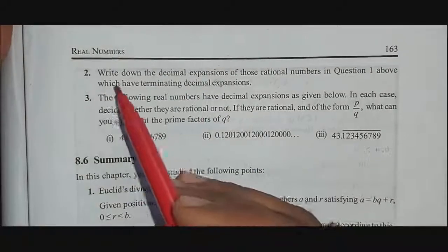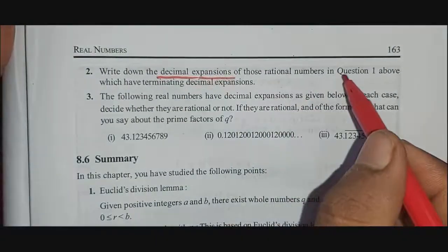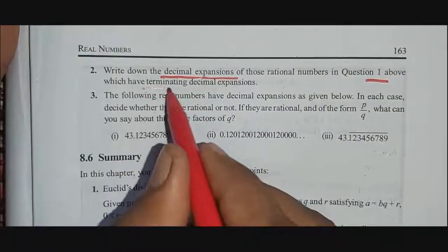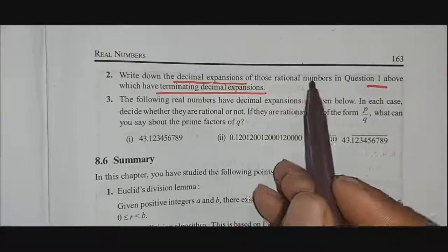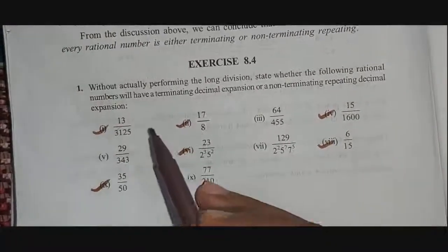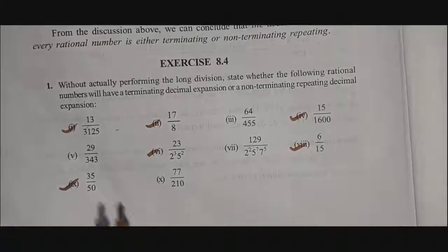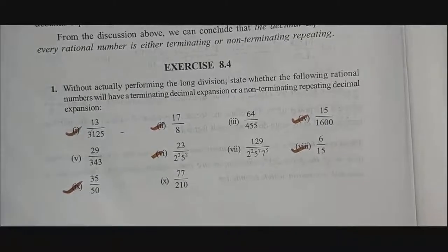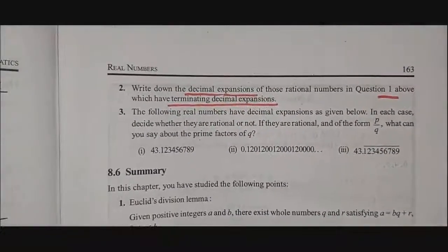Now the second main question: write down the decimal expansions of those rational numbers from question 1 which have terminating decimal expansions. From question 1, the terminating ones are: questions 1, 2, 4, 6, 8, and 9. We now perform the long division for each.